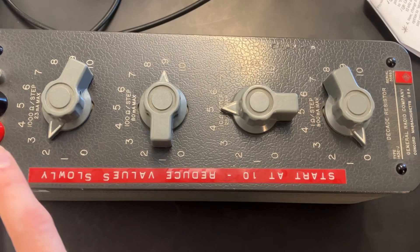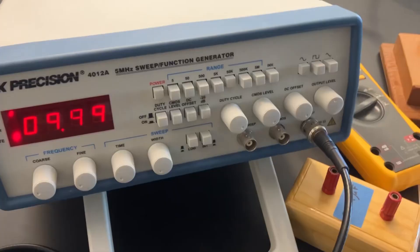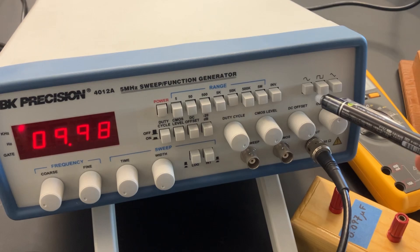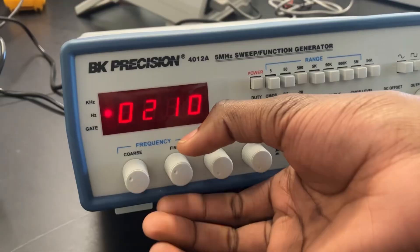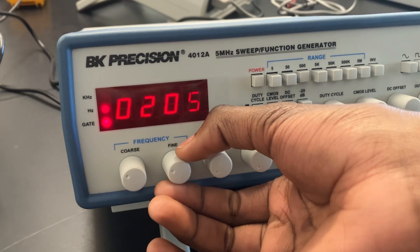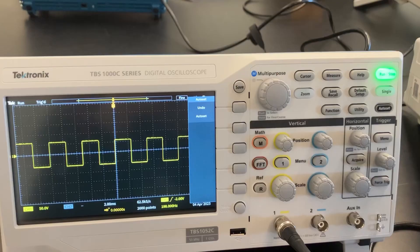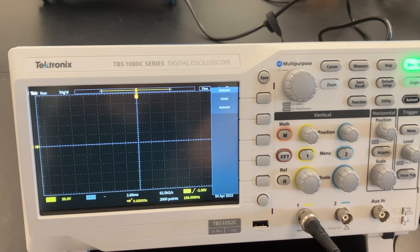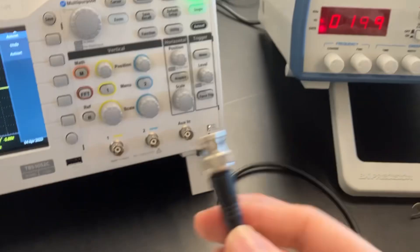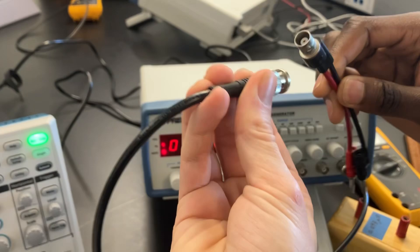We're going to set this to a square wave, which would be this button right here. We're trying to set this to about 200 frequency. After clicking the autoset button, it will refresh the screen and make it look really nice. This is the coaxial cable we're going to plug in right here.